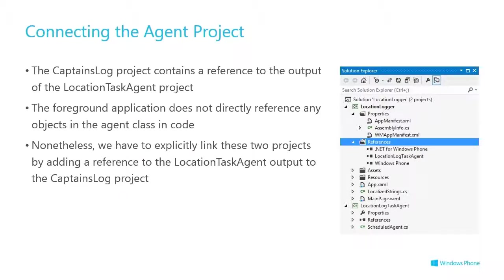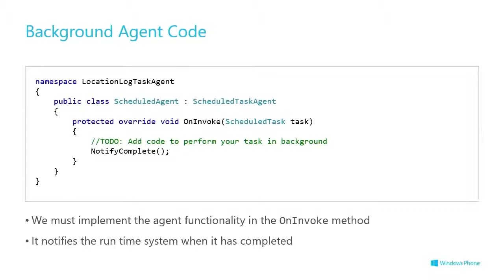In the code that schedules the background agent, you don't explicitly reference a class in the scheduled task agent project — you simply schedule a periodic task or resource intensive task, and the runtime knows which assembly to use through the reference. But this trips a lot of people up. You can create the project and add it to your solution, and unlike normal class library references, there's nothing that will give you a compilation error if you've forgotten to add the reference — it just won't work. So if your background agent doesn't seem to be running, the first thing to check is that you've remembered to add a reference from your foreground app to the background agent project.